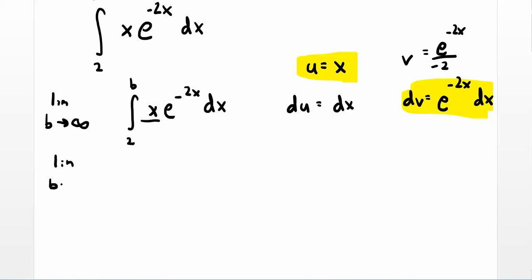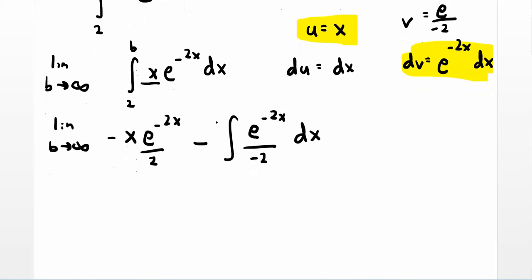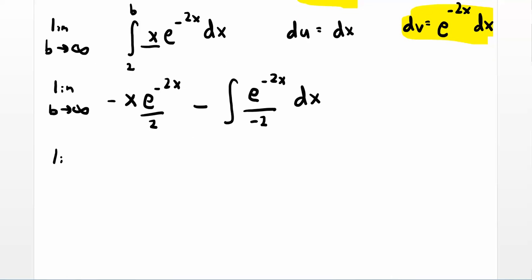So this becomes the limit as b goes to infinity. Remember our integration by parts formula is uv minus the integral v du. So this is now x times e to the negative 2x over negative 2 minus the integral of v du. So be very careful. There's a lot of negatives floating around here. So keep an eye out.